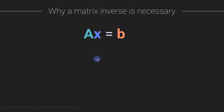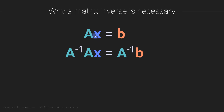Now we get to matrices. The motivation is exactly the same: we have an equation Ax = B, where A is a matrix, X is a vector, and B must also be a vector. Imagine we know matrix A and vector B and want to solve for vector X. The solution is to isolate X on the left-hand side of the equation, which we do by multiplying both sides by A inverse.